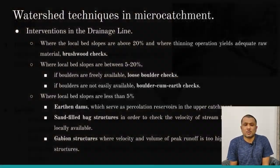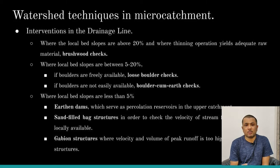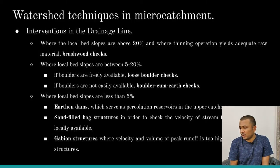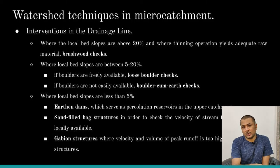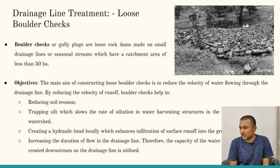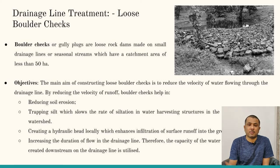Now we will discuss interventions along the drainage line. Different structures are constructed across the stream to arrest water flow based on bed slope. When bed slope is greater than 20%, raw locally available materials are used to obstruct the flow. When bed slope is between 5–20%, loose boulder checks or boulder gum checks are used. When bed slope is less than 5%, water-arresting structures like earthen bunds, sand-fill dams, and gabion structures are adopted.